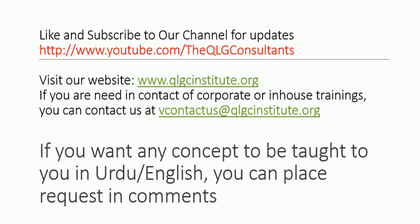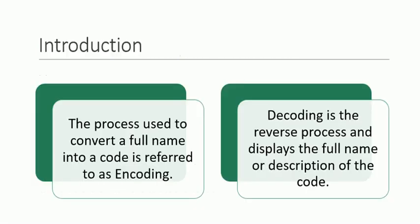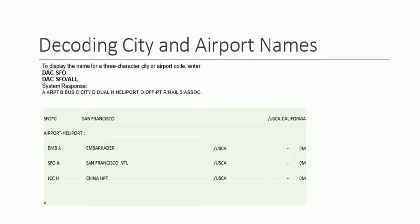You can also visit the website. The concept of decoding is that it is the reverse process to display the full name or description of the airport code. So let's talk simply in this video about how you can decode the airport or city name code.